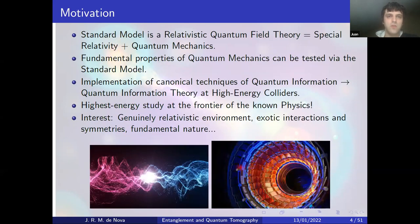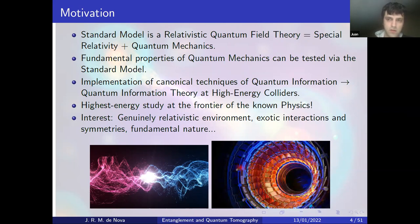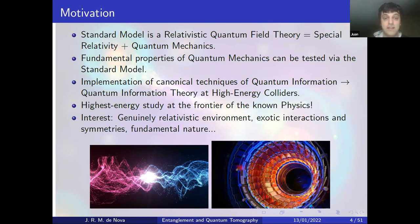What is the motivation? The standard model of particle physics is a relativistic quantum field theory — it combines special relativity and quantum mechanics — so we can test fundamental properties of quantum mechanics within it. By implementing canonical techniques from quantum information, we can study quantum information theory at high energy colliders. This is interesting because it represents a study of these properties at the frontier of known physics, where colliders are genuinely relativistic, have exotic interactions and symmetries, and their constituents are governed by fundamental laws.